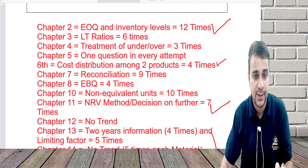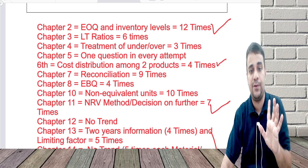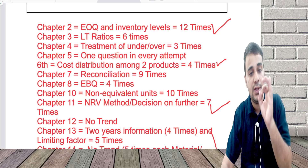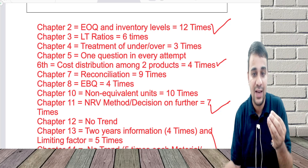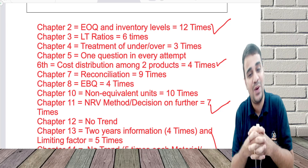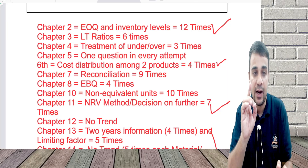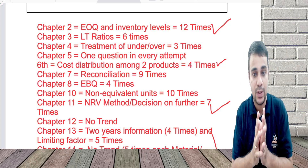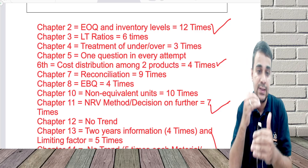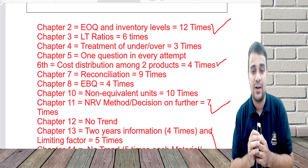I am not saying you should do only this — if you haven't completed a specific chapter, at least see this. If you haven't done Chapter 7, do reconciliation at least. If you haven't done Chapter 2, do EOQ and inventory levels. You should obviously do at least 8 to 9 chapters fully. For chapters where you have an allergy, at least cover this priority area. I have uploaded a playlist of around 35 to 40 hours where concept and questions are solved — click the concept area for timestamps. With this, I am sure you will move towards an exemption in Cost Accounting. Thank you friends.